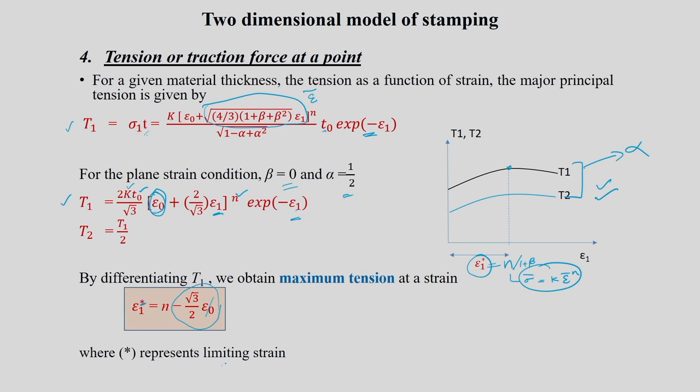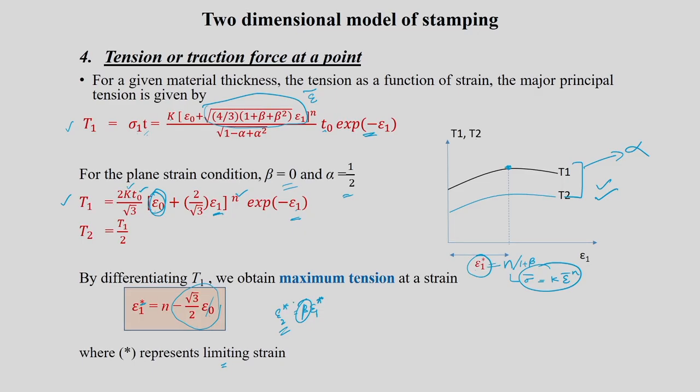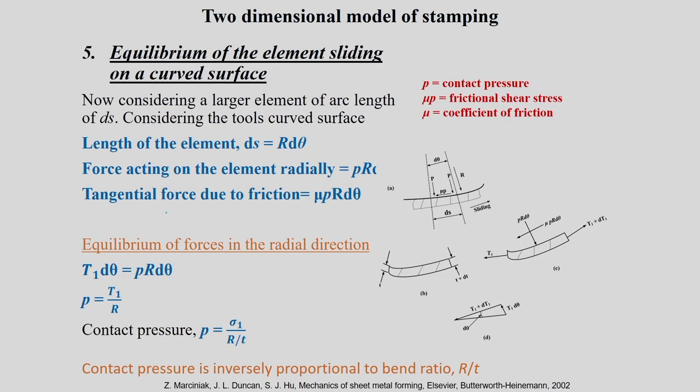Epsilon 1 star is the limit strain value — the major principal strain at which maximum tension is reached. After this, T1 decays. Epsilon 2 star = beta * epsilon 1 star, assuming beta remains the same. So for one element: we can find all principal strains, effective strain, principal stresses, alpha, beta, sigma bar, and then T1 and T2. Applying the maximum tension condition gives epsilon 1 star = n minus (sqrt(3)/2) * epsilon_0.